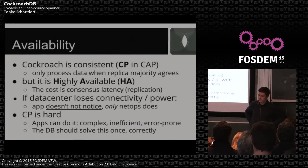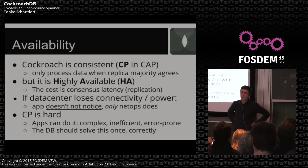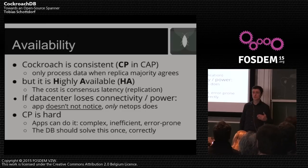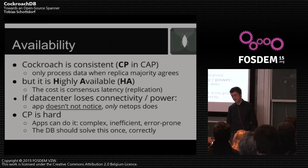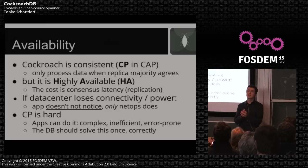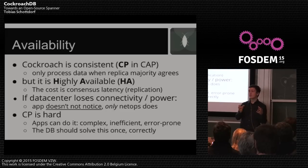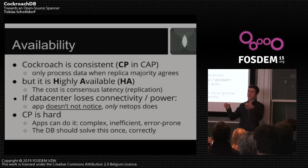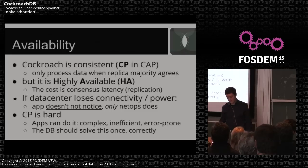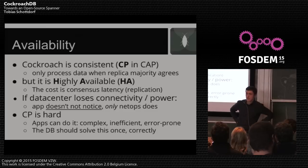Let's talk about what we mean by availability. Spanner is scalable, highly available, and transactional, but you cannot have it because it's not open source and it's deeply tied into Google's infrastructure. What we're doing with CockroachDB is building a system that gives you the same thing but is not tied to that infrastructure. It looks kind of the same but it's not a clone of Spanner — it's something that just winds up giving you what Spanner provides to Google. We're trying to build Google's database that you can just download, and it's open source.